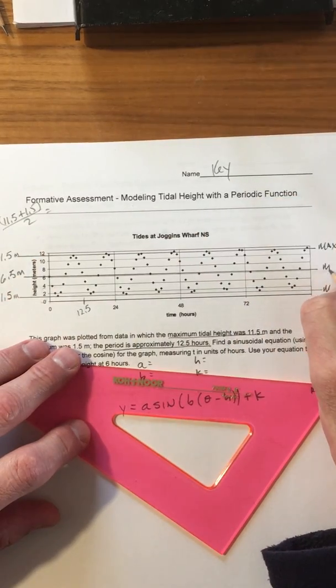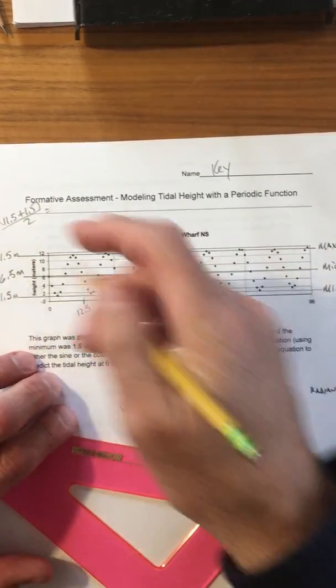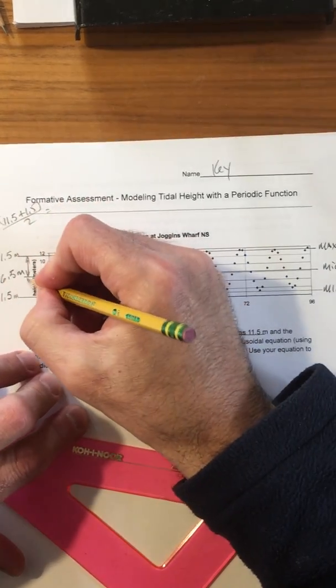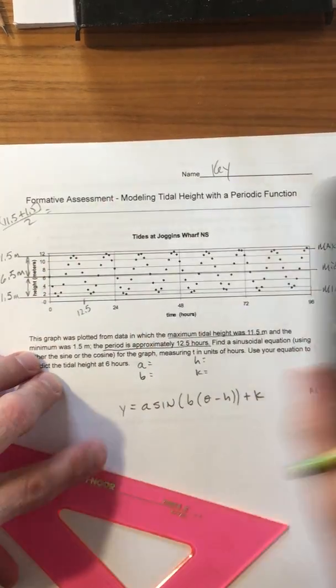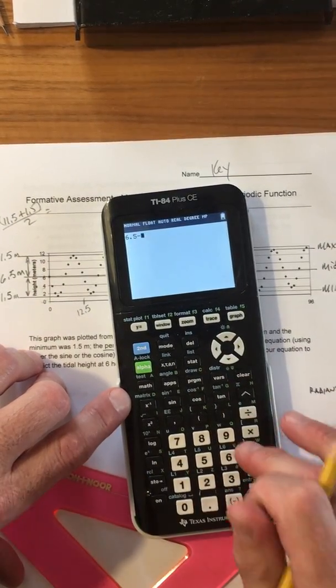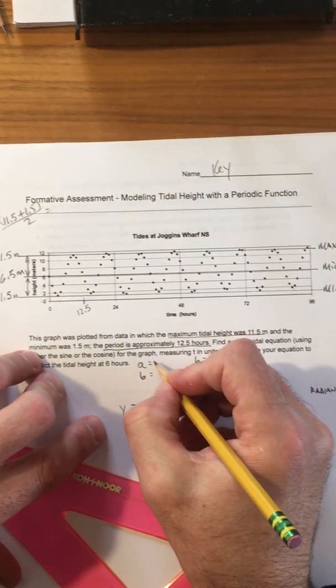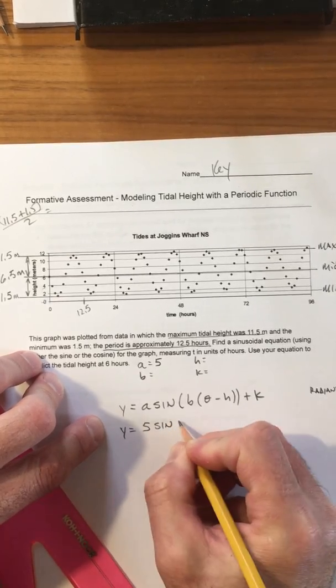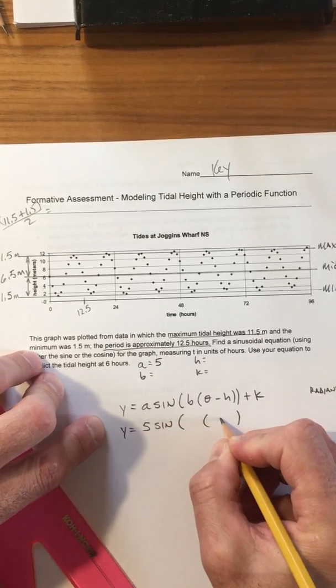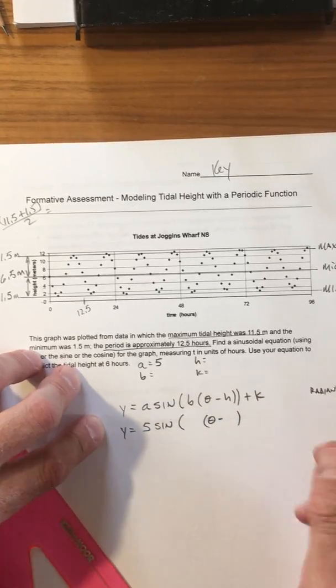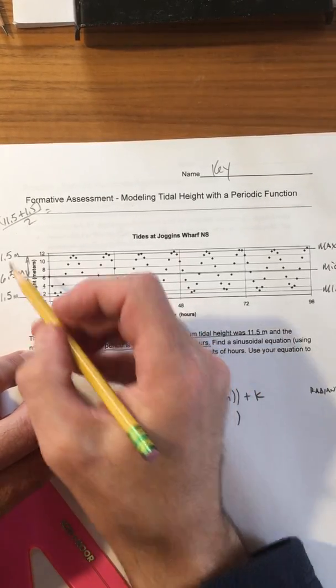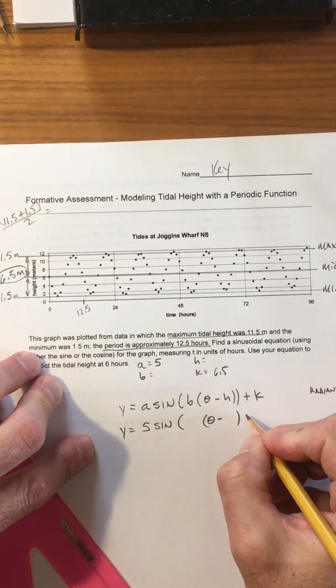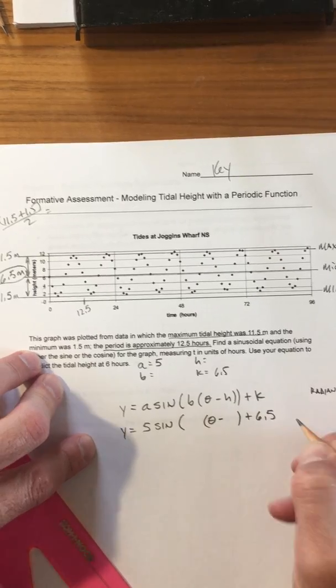Okay, so here's what we know: the distance from the middle to the max or the middle to the min is the amplitude. So let's do this: 6.5 minus 1.5 is 5, so that's the amplitude. So y equals 5 sine, and then let's see, that value is the k value, so that's how far the middle is above the x-axis.